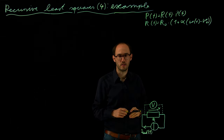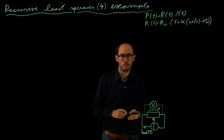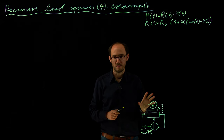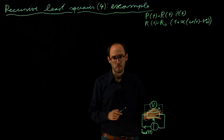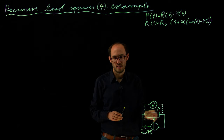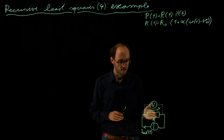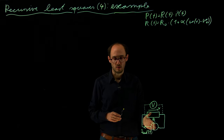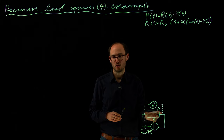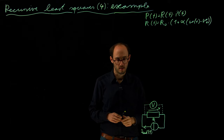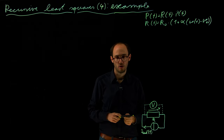Hello everyone. In this video, we want to apply the recursive least squares estimator to a very simple electric circuit, which is basically just a resistor, which is powered by a current source and where we can measure the equivalent voltage over the resistor by this voltage sensor.